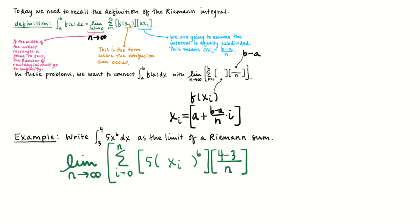And then xi, well, it starts with 3 plus 1 over n times i, b minus a over n times i. And that's us writing that integral as the limit of a Riemann's sum.